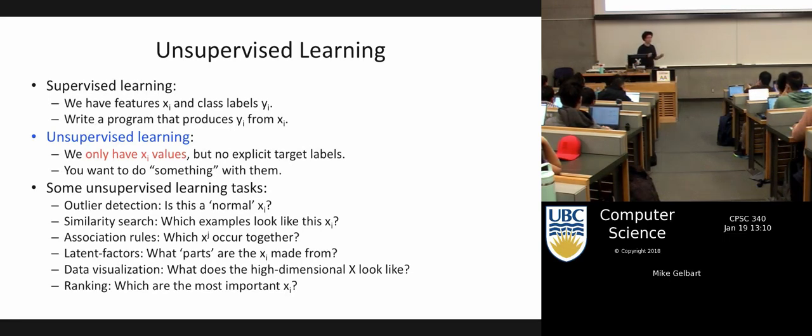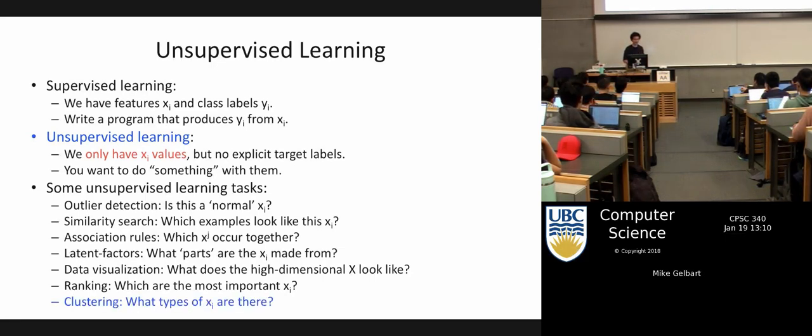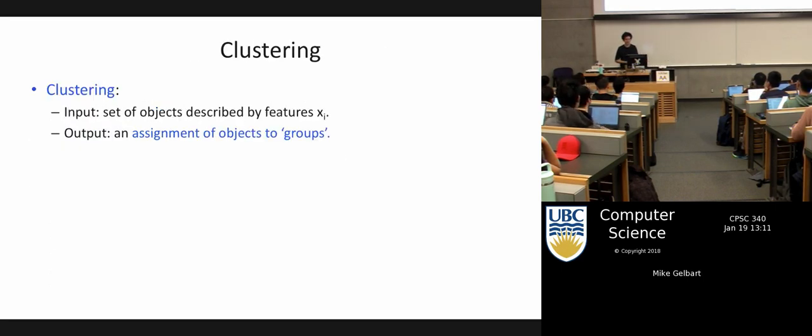Things that you can do with unsupervised learning, and we will talk about almost all of these in this course. Outlier detection, similarities, product recommendations, latent factors, turning, breaking things down into parts, which we'll get to later in the course, visualizing high-dimensional data. We won't talk about ranking this term, and clustering is another one. There's a whole bunch of things you can do with unsupervised learning, and they may arise in different situations.